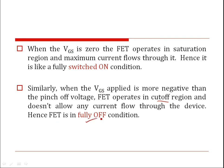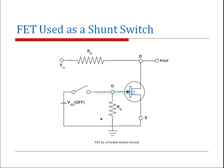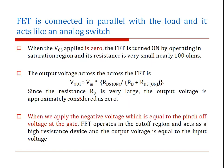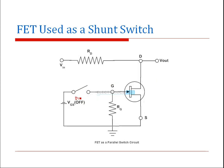There are two methods in which you can use the FET as a switch: shunt and series. When used as a shunt switch, the FET is connected in parallel to the load, input is given at one point and output is taken across it. When VGS is zero volts, the FET is turned on by operating in the saturation region, so the resistance is very small — close to 100 ohms — and the output is zero.